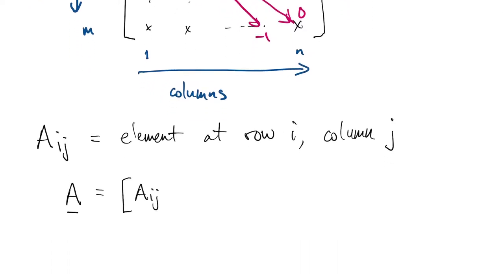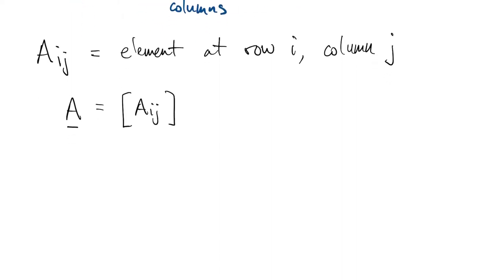I'm going to try to underline the matrix names to make them stand out. Sometimes we'll just write that it's the matrix of its entries, Aij.